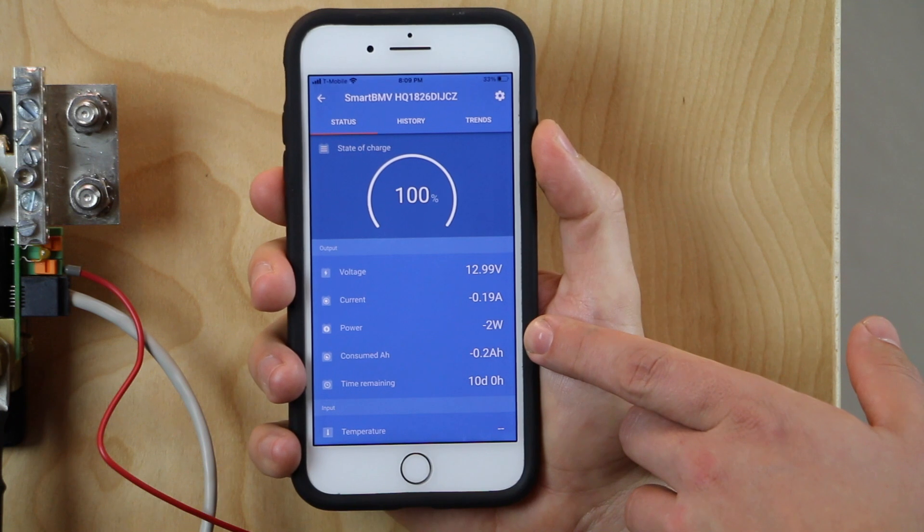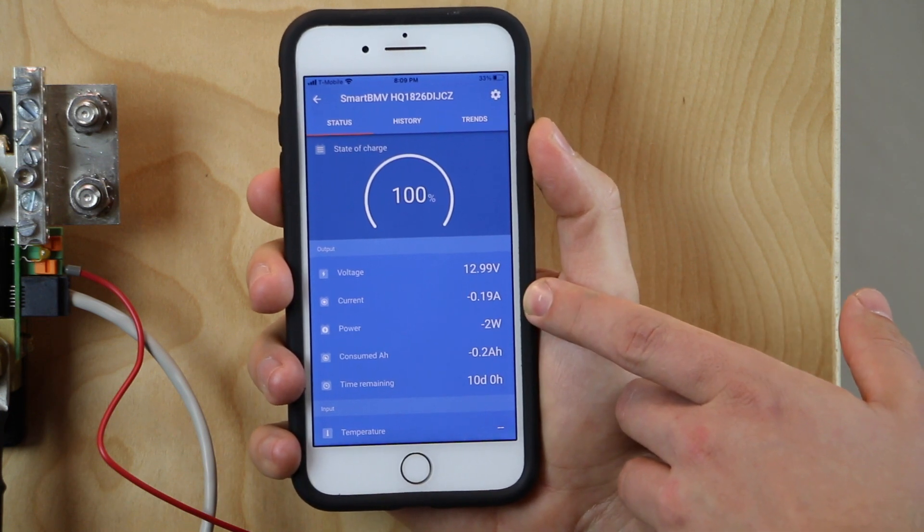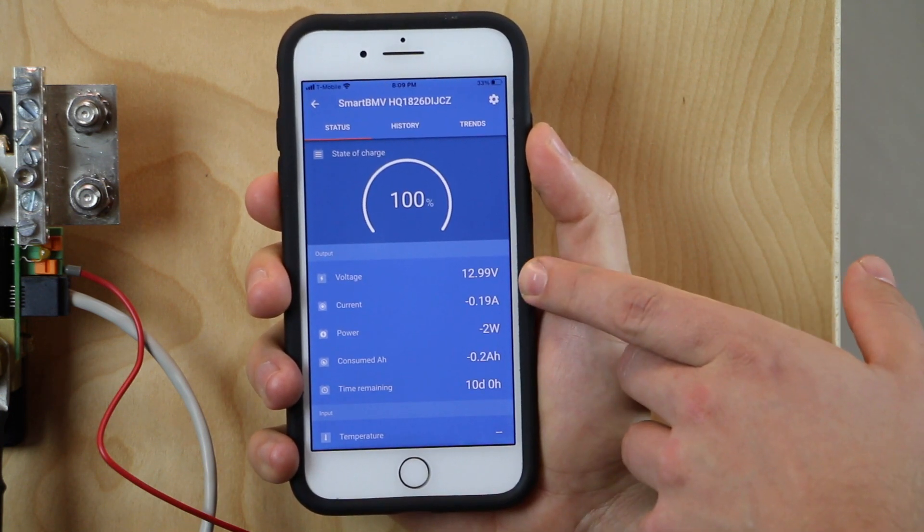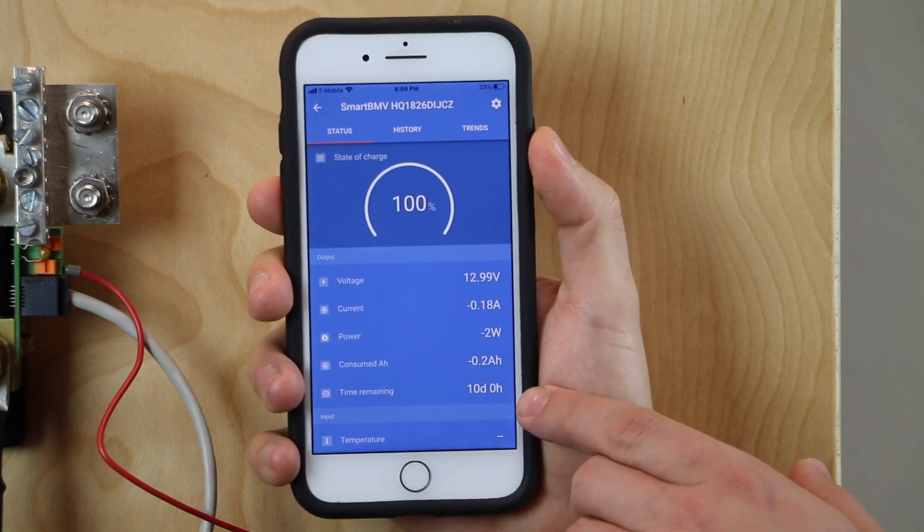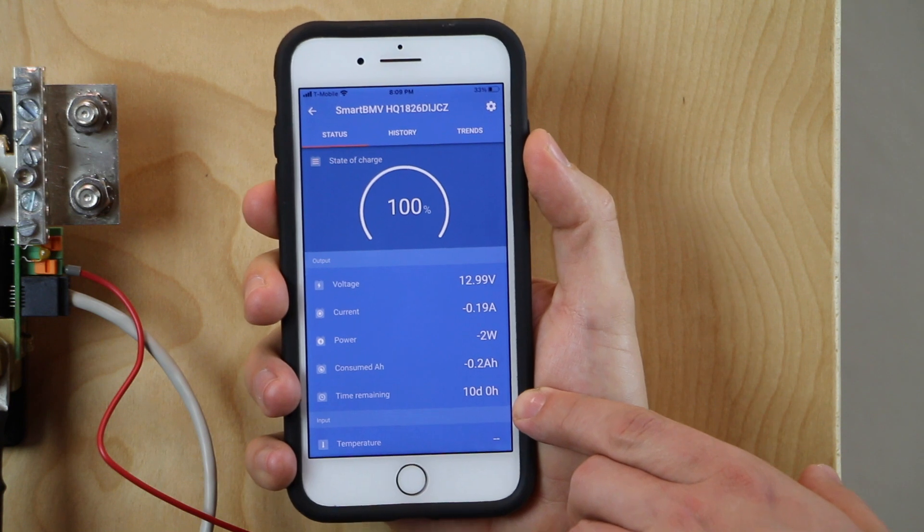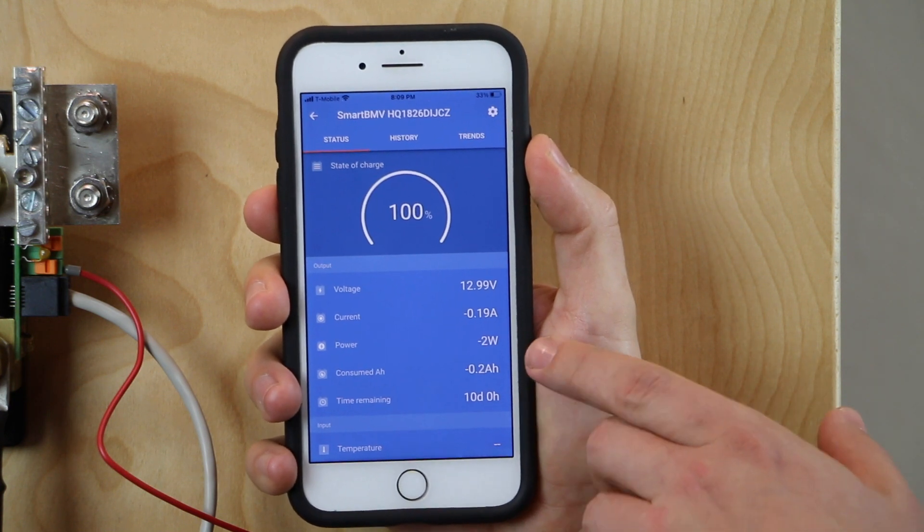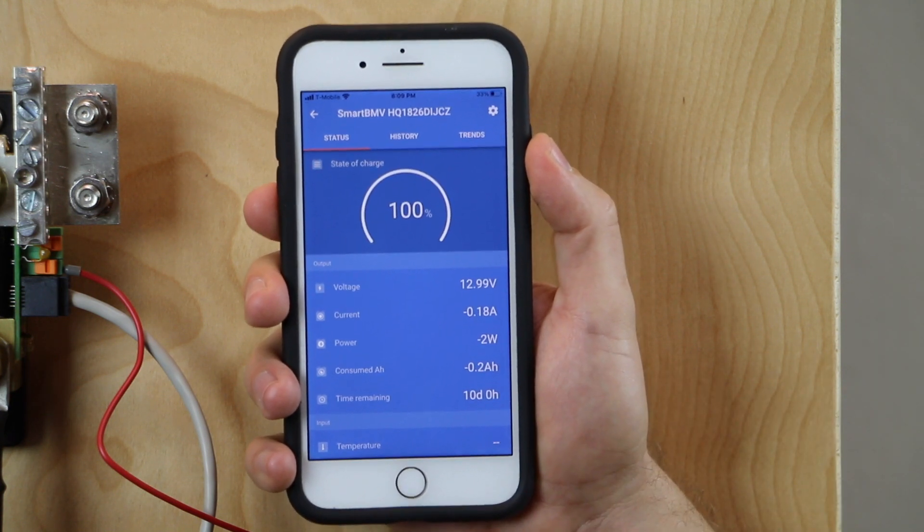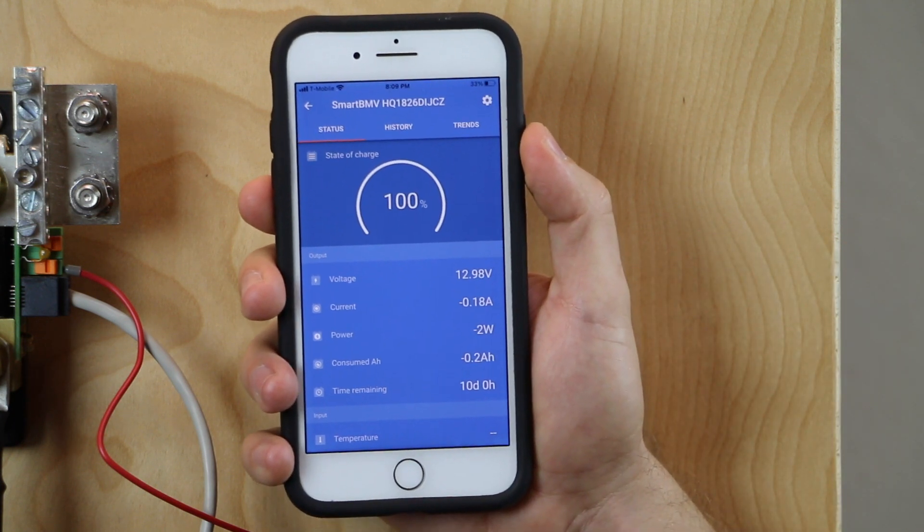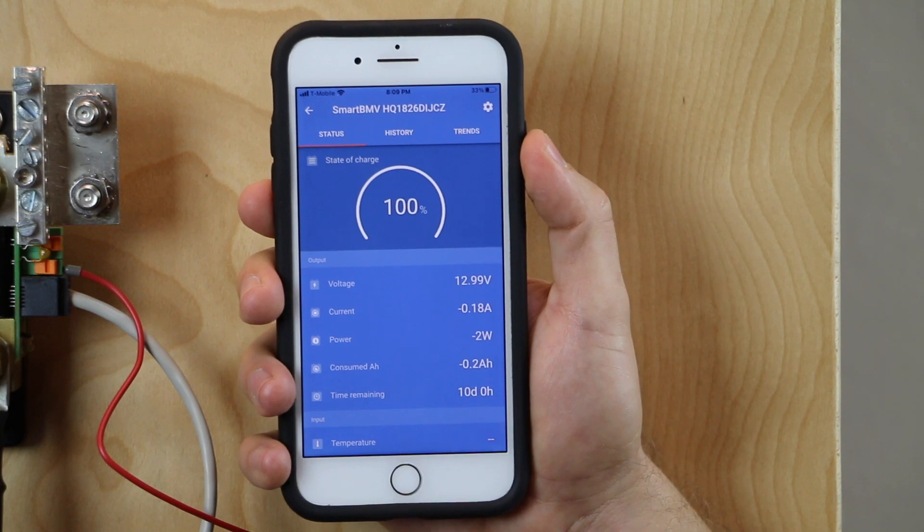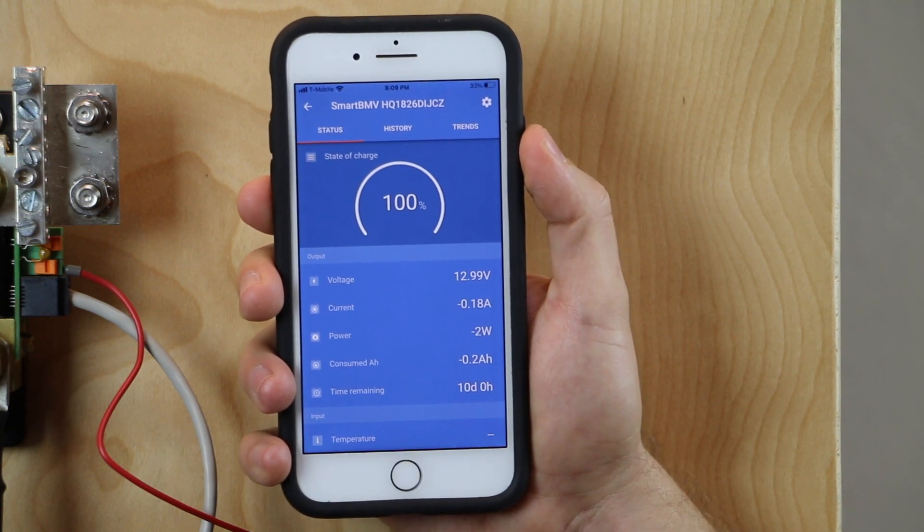Alright, so we're at negative two watts, negative 0.19 amps. We are dropping to 12.99 volts. We were at 13. You can see the time remaining is now down to 10 days, zero hours. It used to say infinite and that is going to continue to drop. We still have a 100% state of charge. We're not pulling a whole lot of power out but that will eventually drop to 99% and so on.